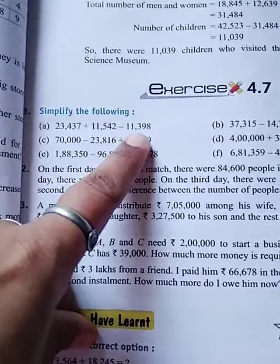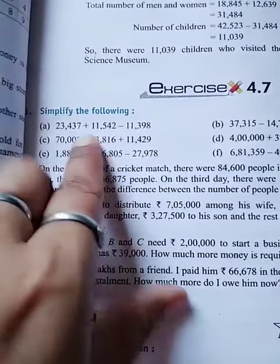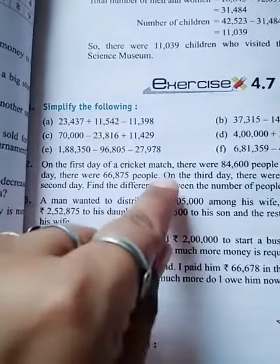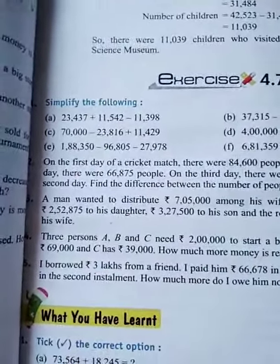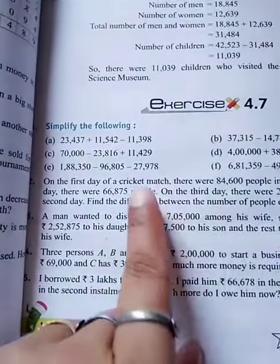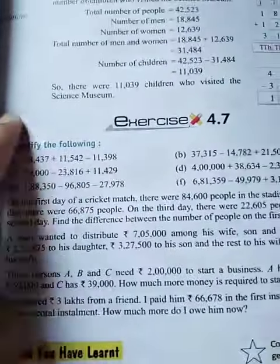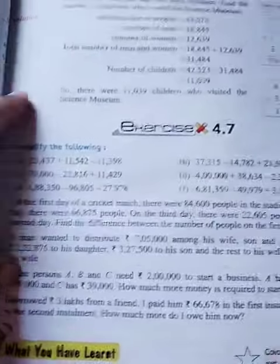So dear students, our first digit is plus sign, so we do plus first. Then our answer, which we will get, we subtract 11,398. Okay students, let's start our first question.